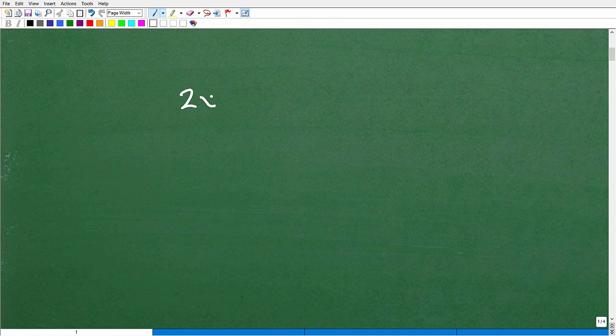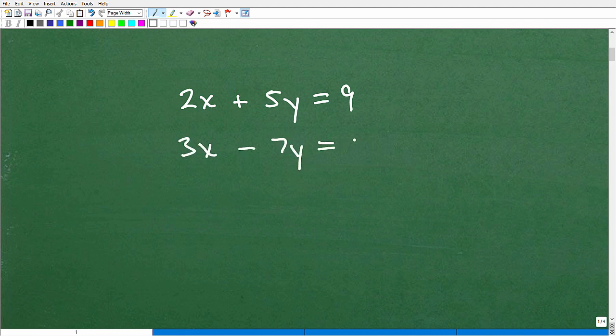And first, I just want to explain why something like this is so important, this skill. So let's say I had 2x plus 5y equals 9, and maybe 3x minus 7y equals, let's say 3. And we have some sort of system of equations. Now, if you haven't studied systems yet, you will be shortly. So if you're looking at this video because you're kind of doing this in math class right now, well, this topic of systems is going to be coming right around the corner.